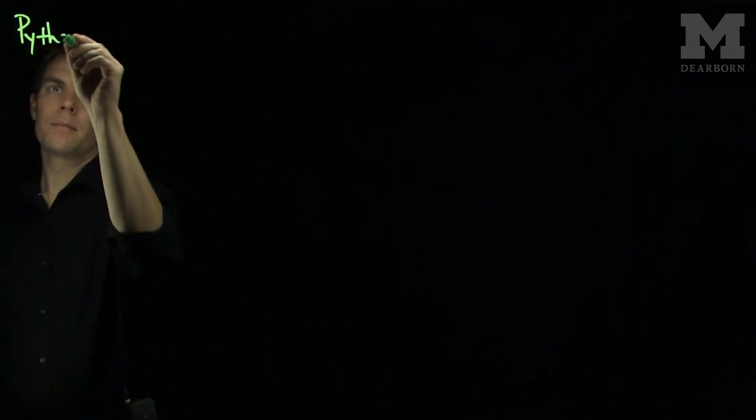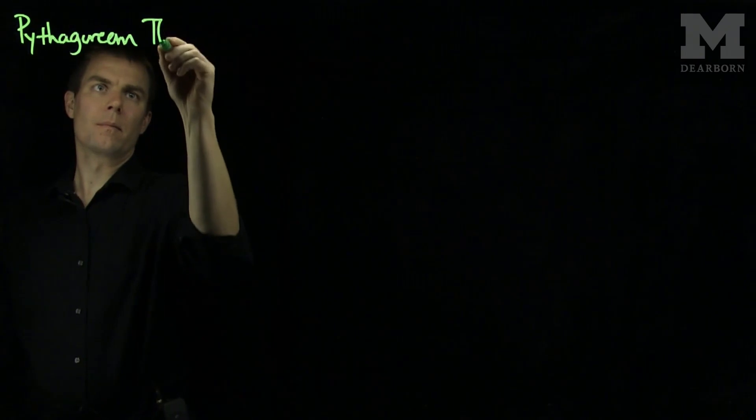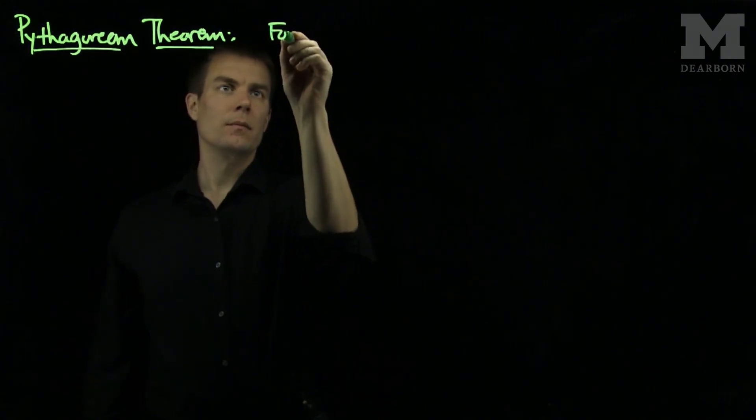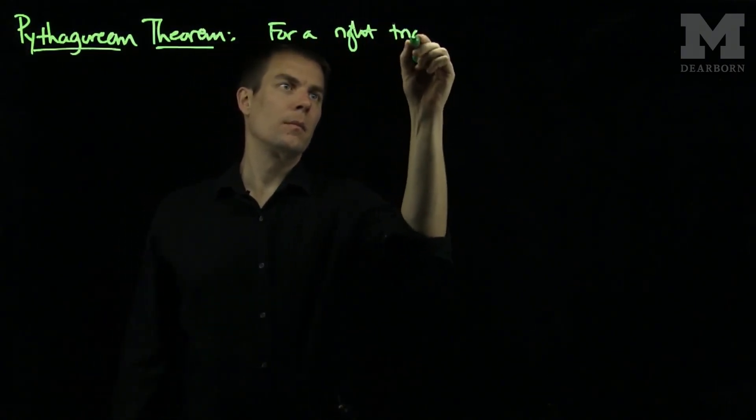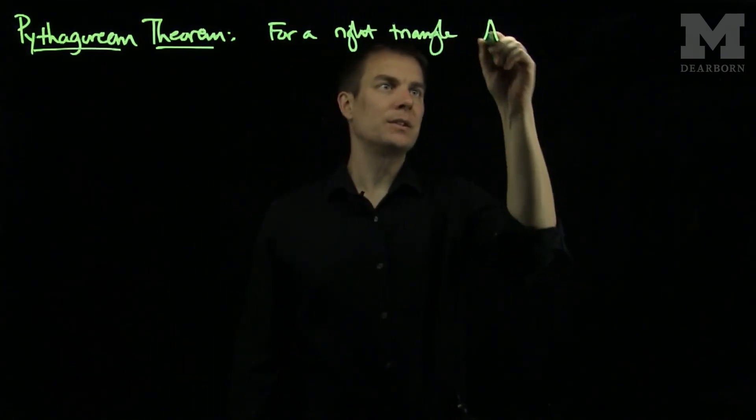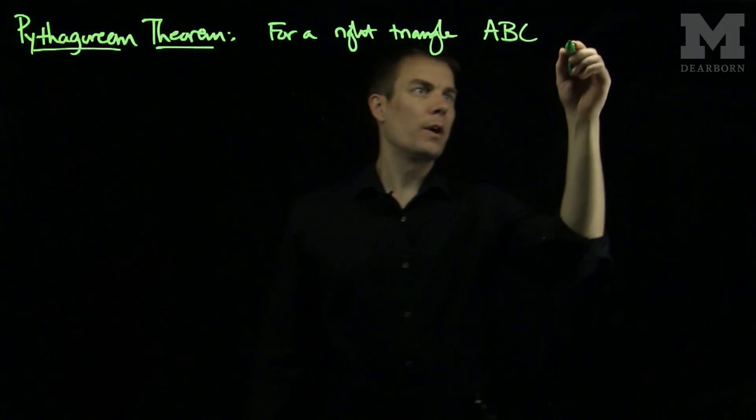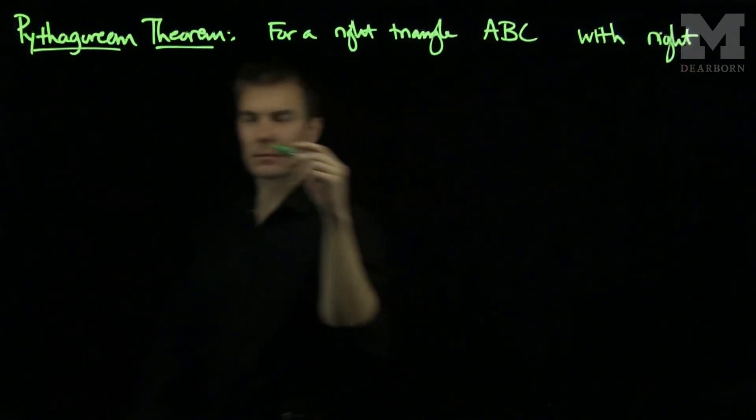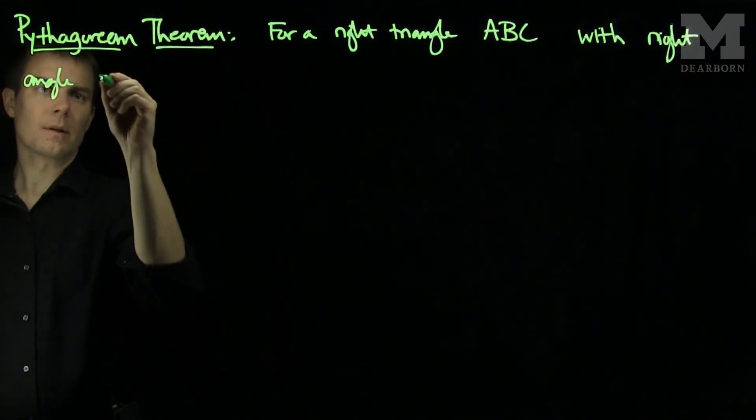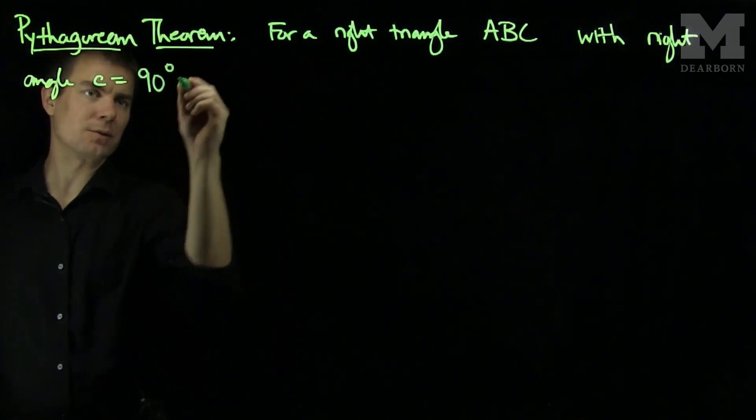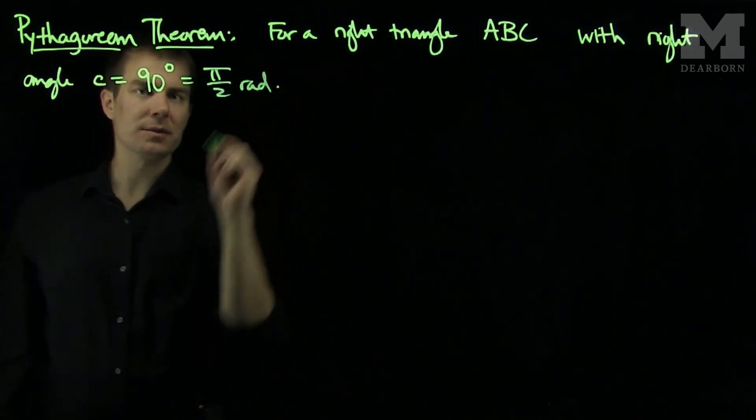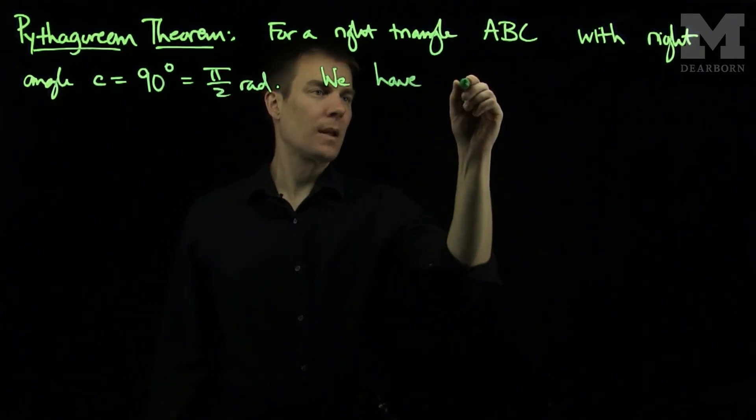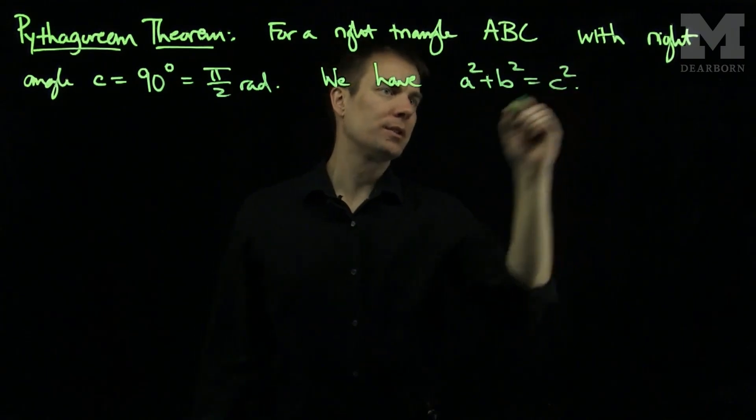The Pythagorean Theorem states that for a right triangle a, b, c, with right angle c, so the angle c will be 90 degrees or π over 2 radians. We have a² + b² = c².